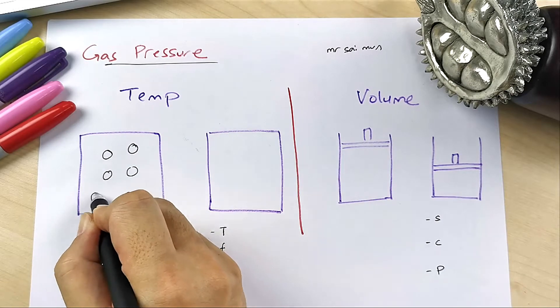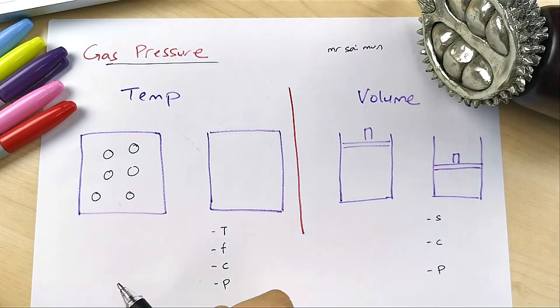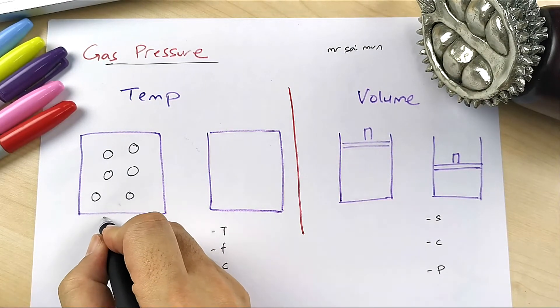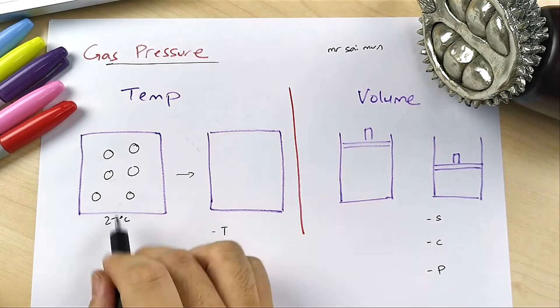Let's say you have a Coca-Cola can with gas inside moving around - six gas particles. At room temperature, 27 degrees Celsius, you heat it up with fire and the temperature increases to, for example, 200 degrees Celsius.